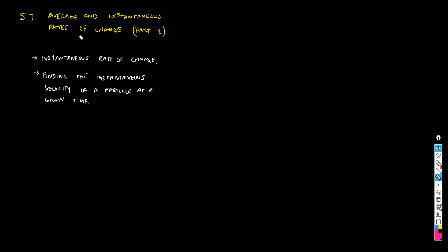In this case we usually use y and x, but remember the names of the variables are not important — it's not going to always be y and x. Today we're going to define what an instantaneous rate of change means, and also we're going to solve this problem, which is finding the instantaneous velocity of a particle at a given time. So let's start.